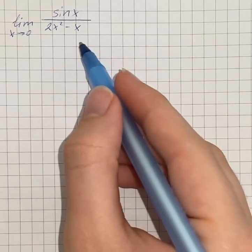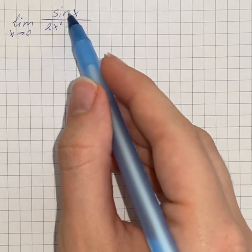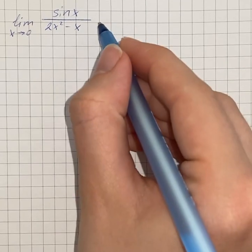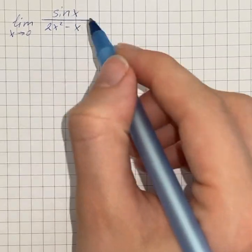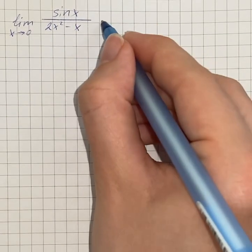We have to evaluate the given limit, and by direct substitution we get the indeterminate form 0 over 0. So first we're going to simplify our function.